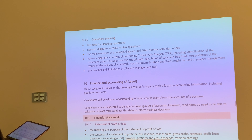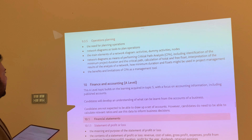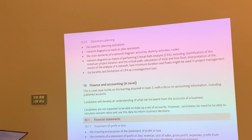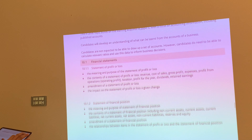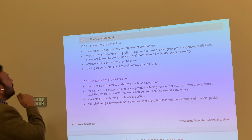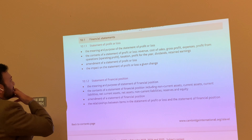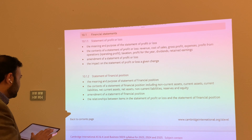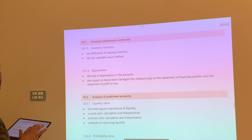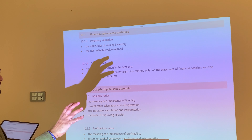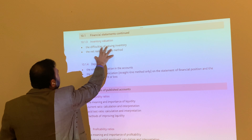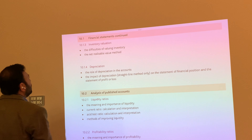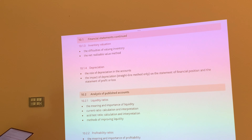Operations planning — the need for operational planning is there, CPA and all that is already there, we have been teaching that and there is nothing special new in that. Coming to section number 5, which has been made section number 10 now: statement of profit and loss has moved from A1 to A2, statement of financial position from A1 to A2. Financial inventory valuation is a new thing now — the difficulties in valuing inventory and the net realizable value method are the two new things we have to teach students.